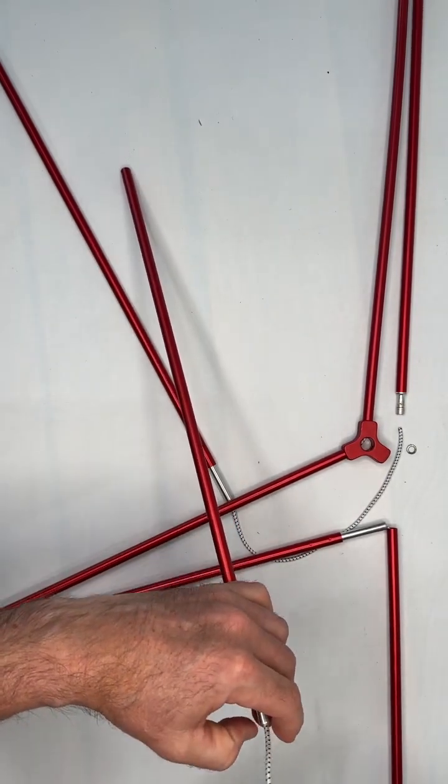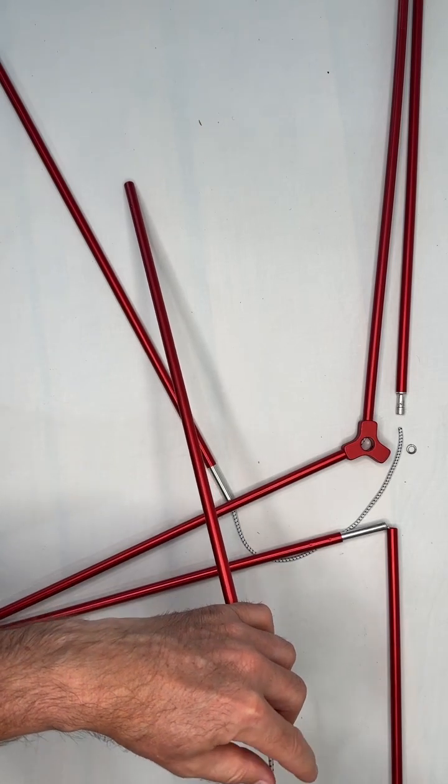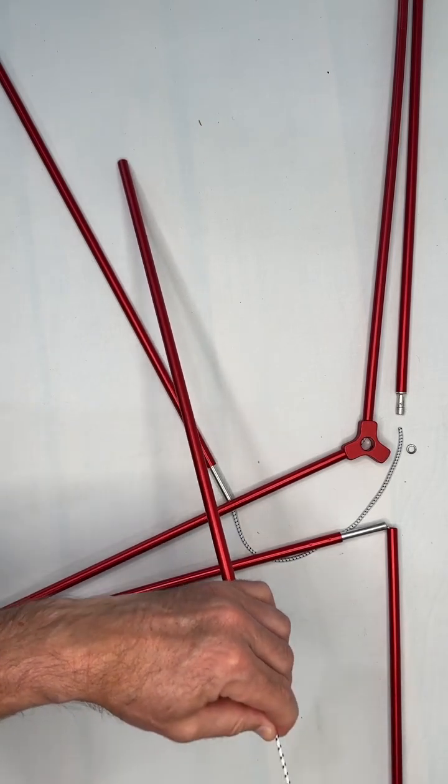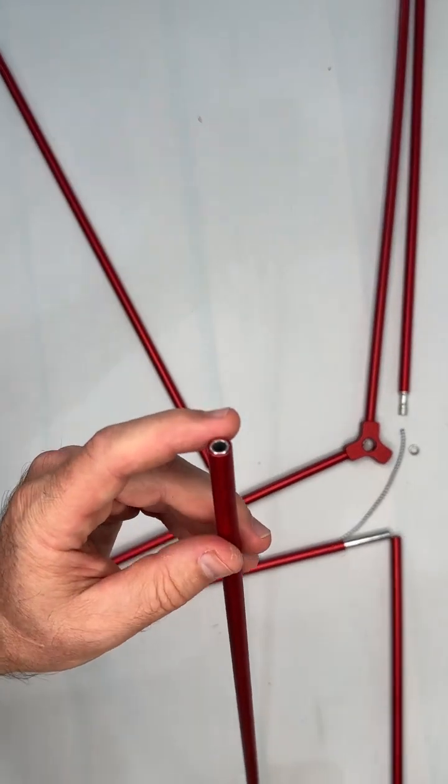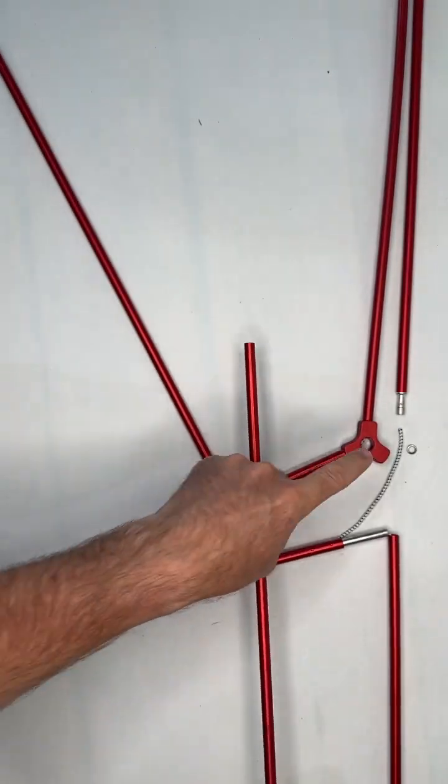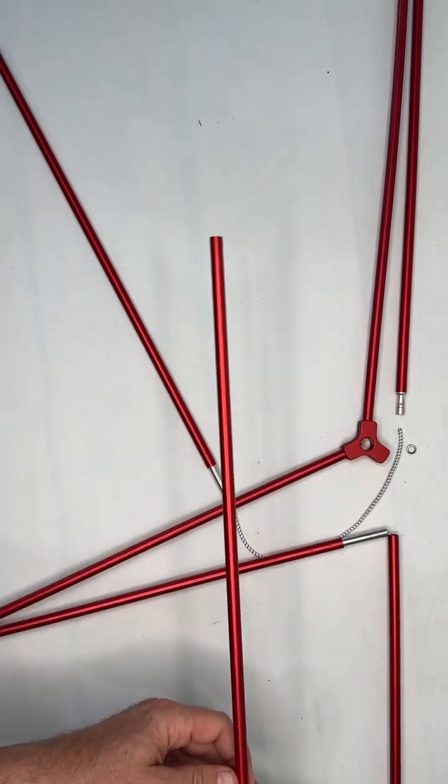Just notify us based upon which section it is. Some of the section poles are different lengths, and we also want to ensure that we send you the right type of pole if it has an insert into it based upon if it's located at the triple joint here.